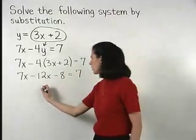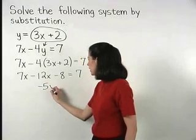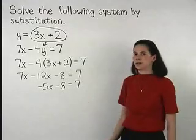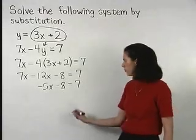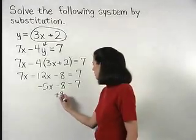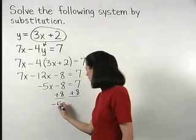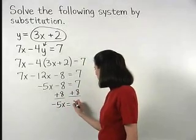Simplifying further, we have negative 5x minus 8 equals 7. Adding 8 to both sides gives us negative 5x equals 15.